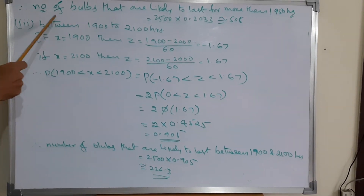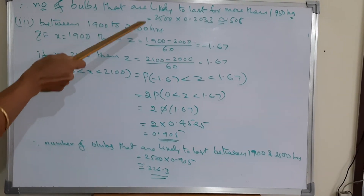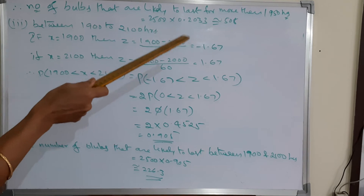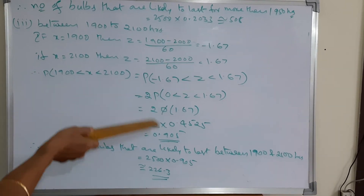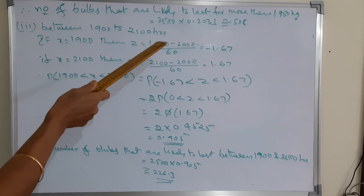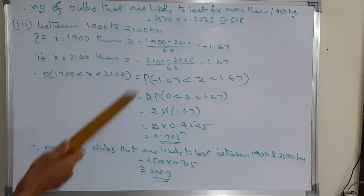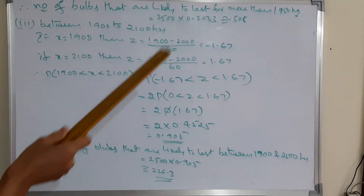Therefore, the number of bulbs likely to last less than 1950 hours equals 2500 multiplied by 0.2033, which is approximately 508 bulbs.